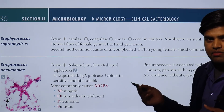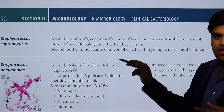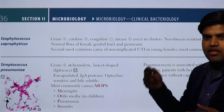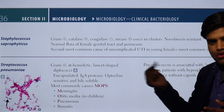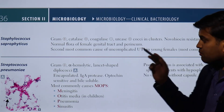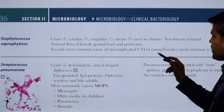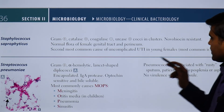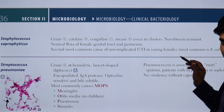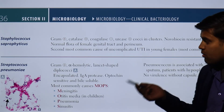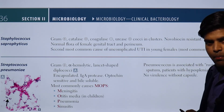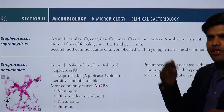Staphylococcus saprophyticus is a normal flora of the female genital tract and perineum. It is usually not causing any disease, but it may be responsible for honeymoon cystitis — a urinary tract infection. When a female is first exposed to sexual activity, this normal flora can be introduced into the urinary tract and cause infection. This is the second most common cause of uncomplicated UTI in young, sexually active females.